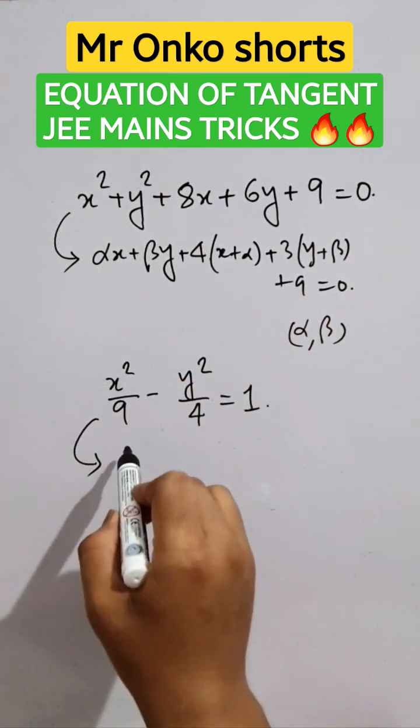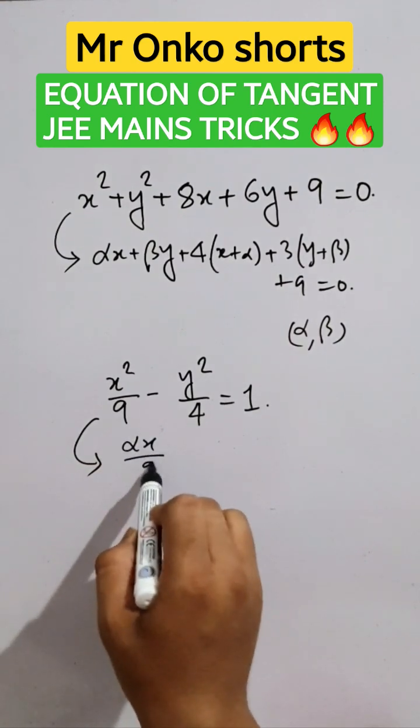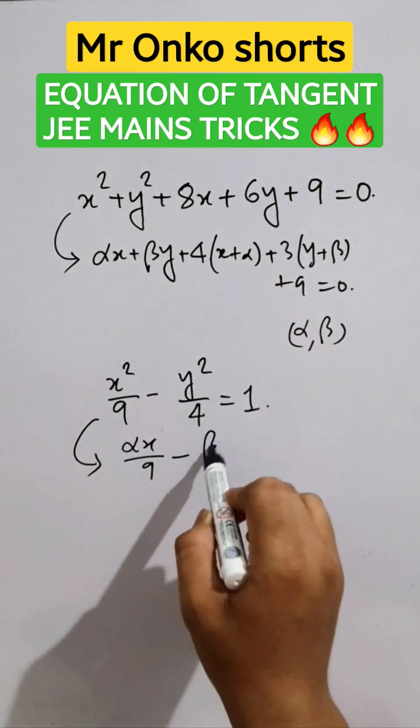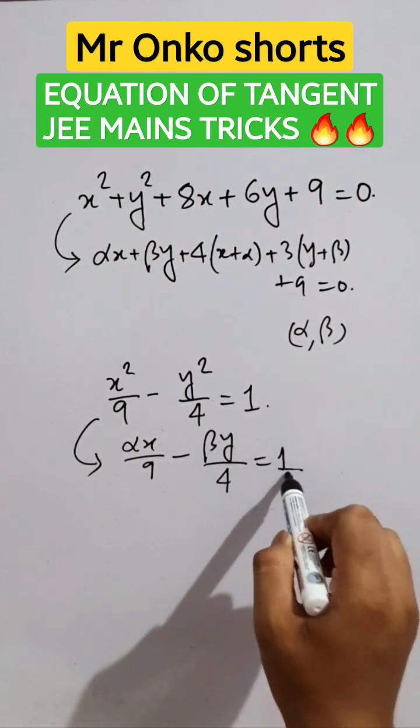Now in this case it will be x square so it is alpha into x divided by 9 minus beta into y divided by 4 equals to 1.